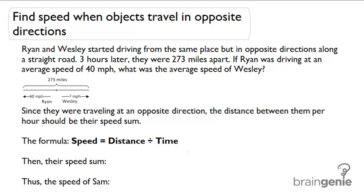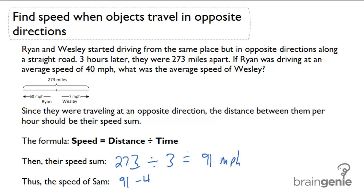For this, I have 273 miles divided by 3 hours, which gives me 91 miles per hour. So their total speed had to be 91 miles per hour. And we know that Ryan was driving at 40 miles per hour, so I can simply subtract 91 minus 40, and Wesley's speed had to be 51 miles per hour.